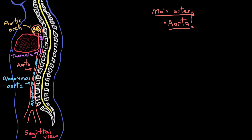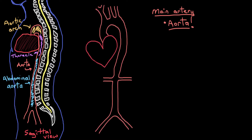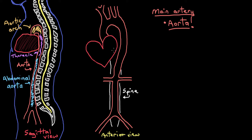So now we've looked at the aorta from a side view, but to get an even better appreciation of what the aorta looks like, let's look at it from a front view, or an anterior view. Hopefully you can imagine that the aorta is sitting about midline in our bodies, and it runs down behind the heart, sort of following the spinal column. The aorta is really the main artery in our bodies — it's sort of the big highway that blood takes to get to every other part of the body.